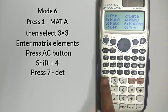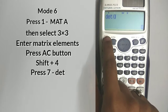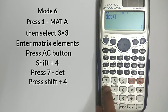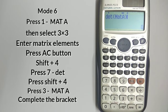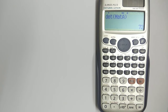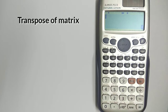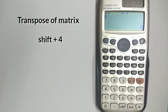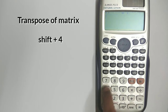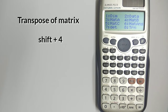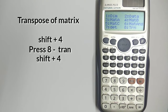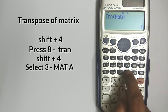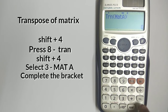Press Shift plus 4 to find the determinant, then press 7. Again press Shift plus 4 and select matrix A, complete the bracket, and press equal to — you get your determinant. To find the transpose, open matrix mode options again, select 8 for transpose, press Shift plus 4, select matrix A, complete the bracket, and press equal to.